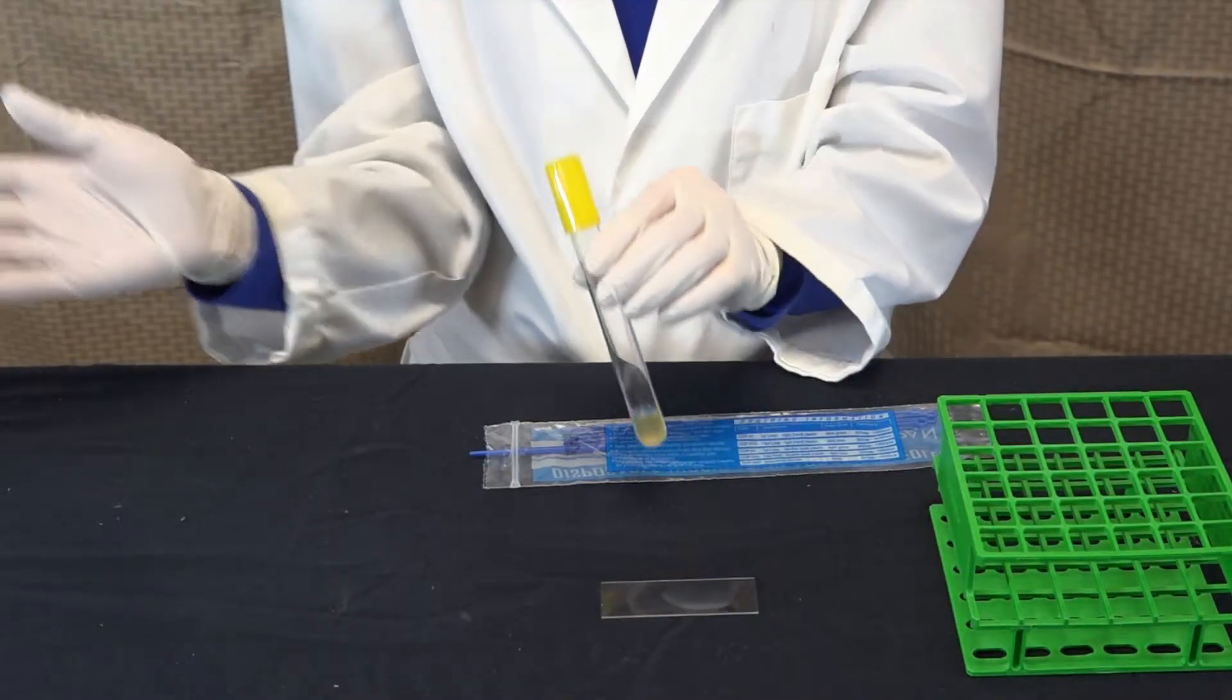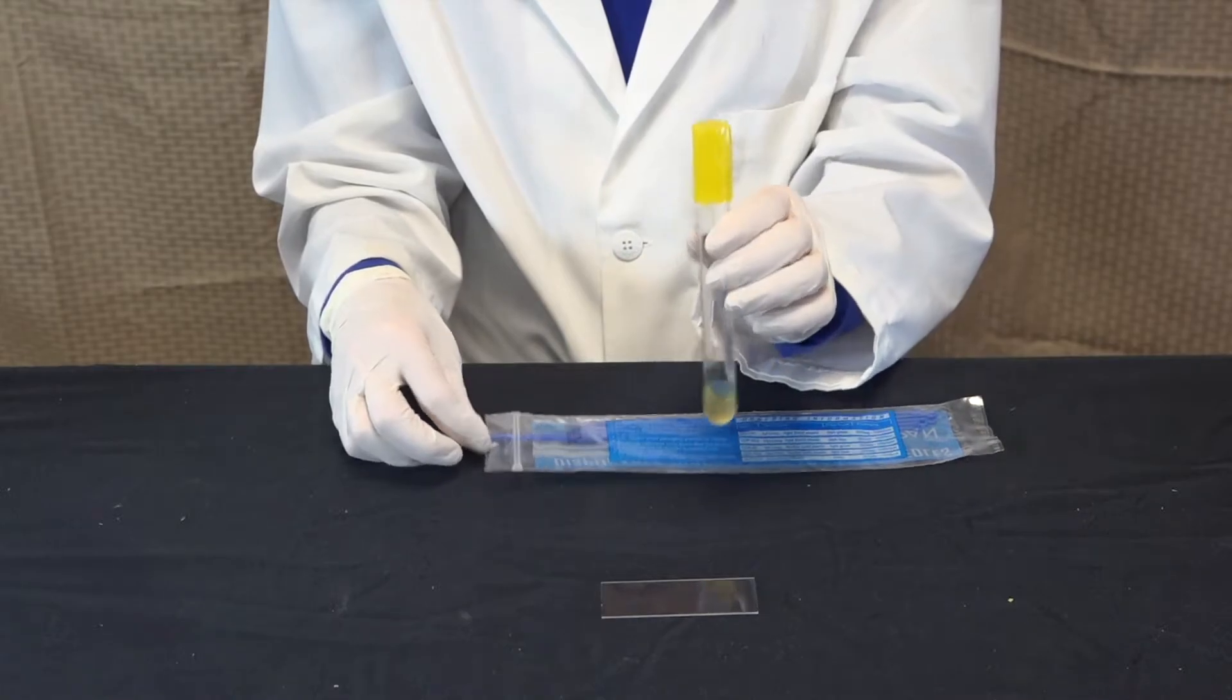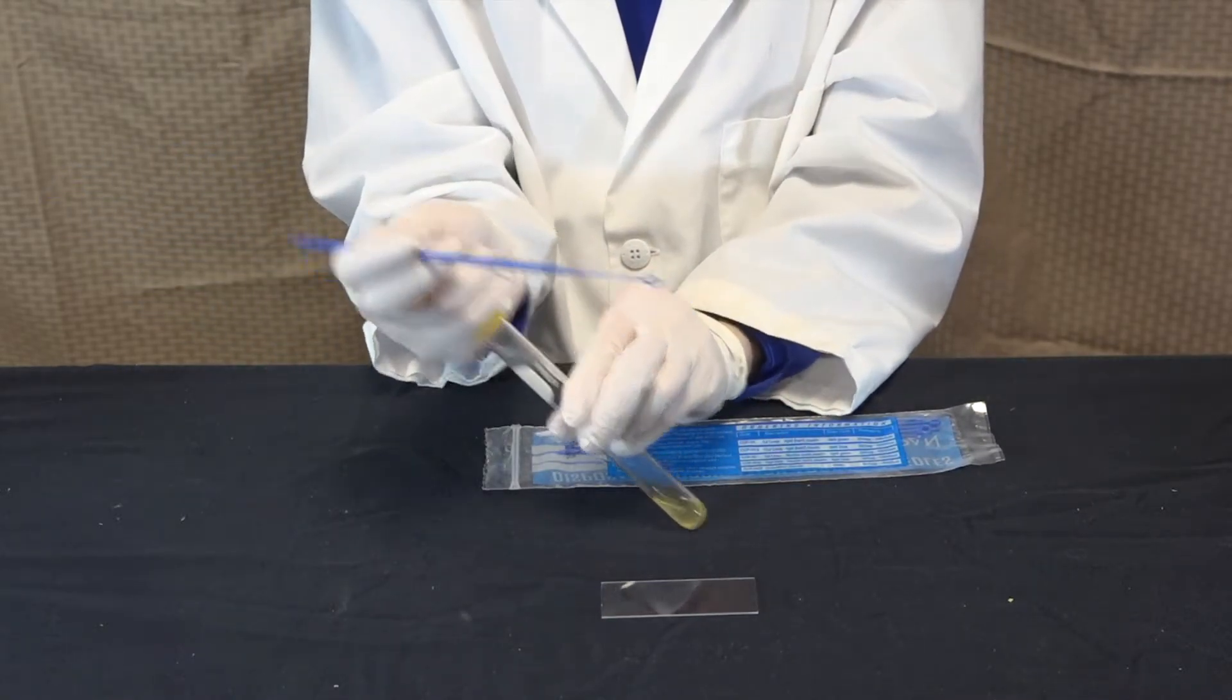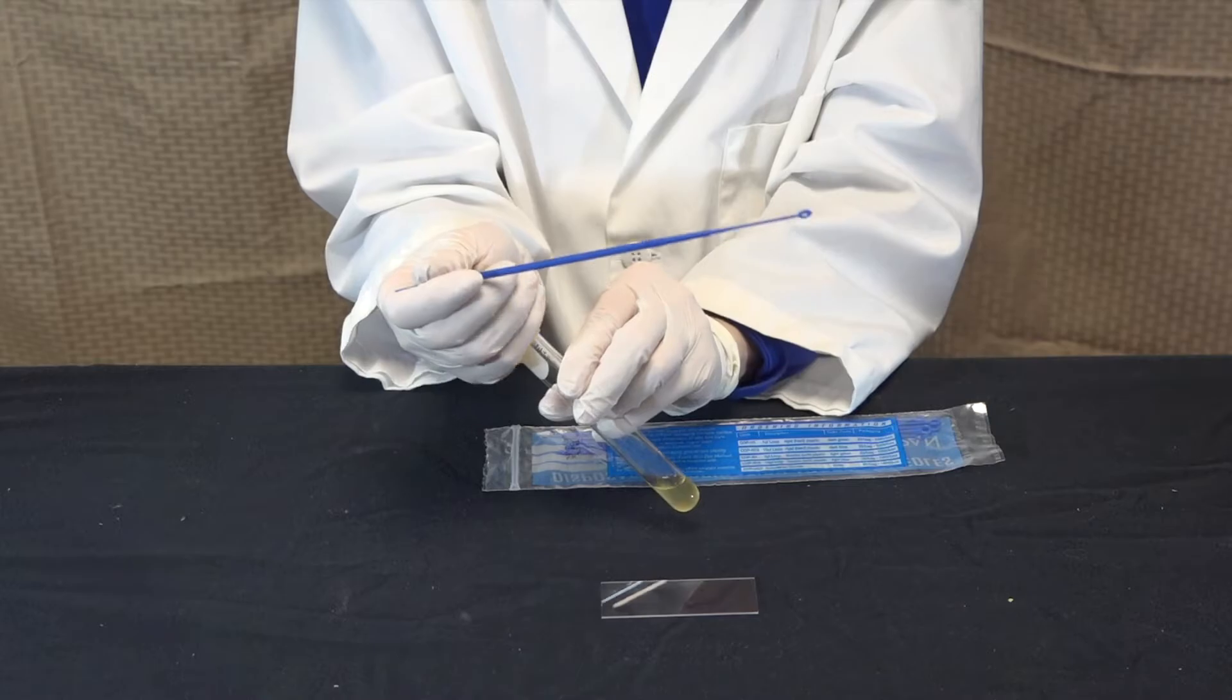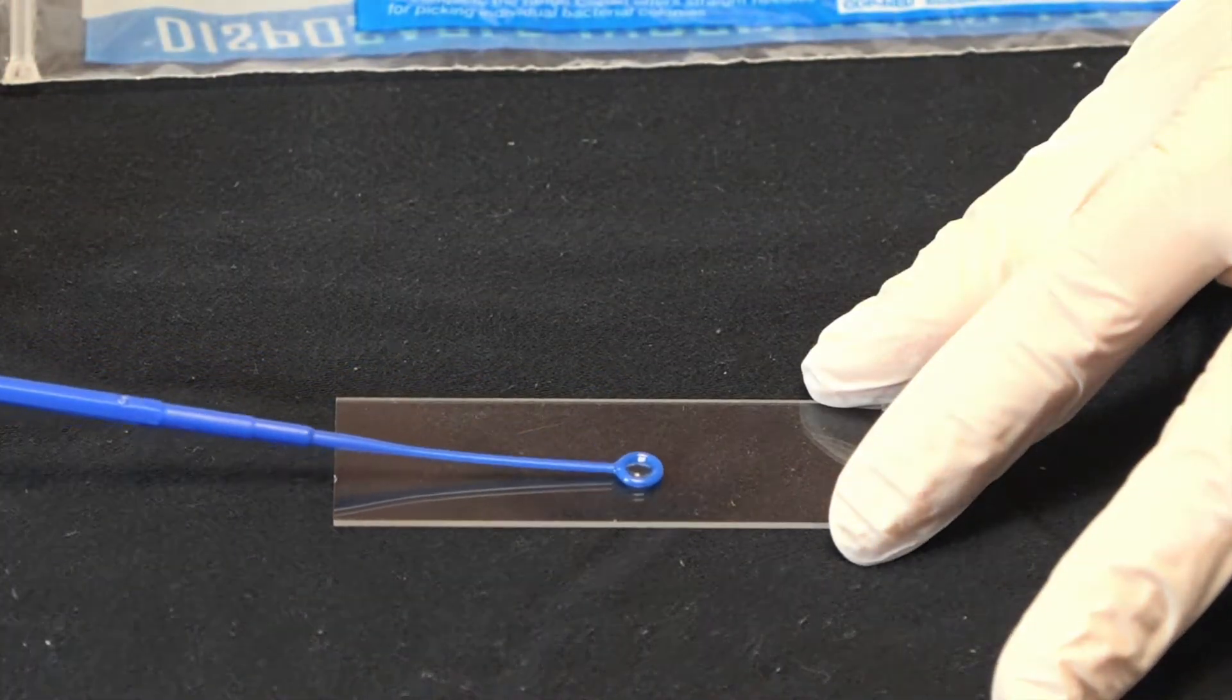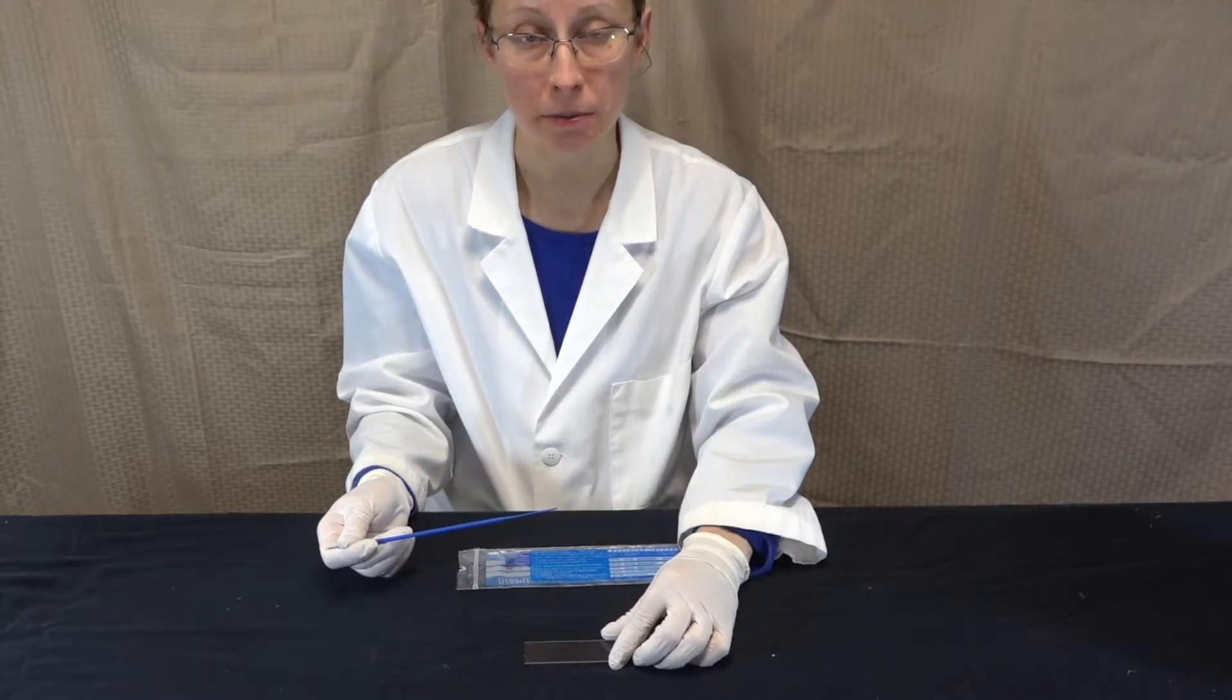I'm going to take a broth culture of bacteria. If your culture has settled, go ahead and agitate it to mix up the culture. Then take a sterile inoculating loop and get a loop full of bacteria. I'm going to spread the bacteria in a circle one centimeter radius in the center of the slide. Now let the slide air-dry completely.